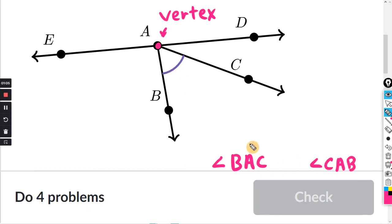Notice that in both cases, the vertex letter is the middle letter. That's the main thing you have to worry about. The vertex is the point where the angle starts. It's basically the end point of the two rays that make up the angle.